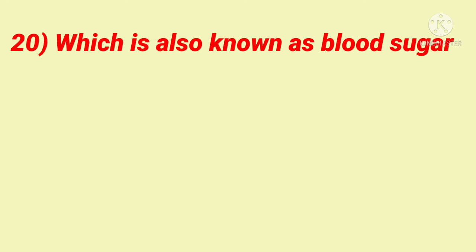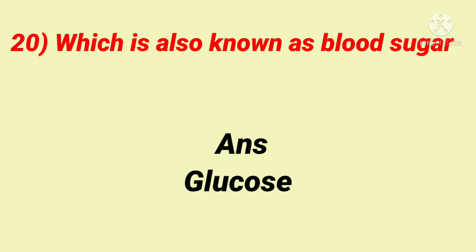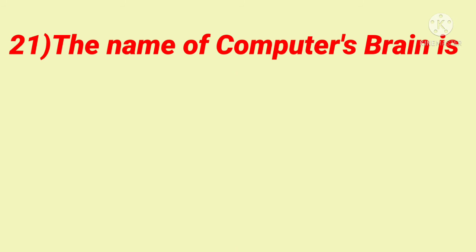Which is also known as Blood Sugar? Answer: Glucose. The name of the computer's brain is... Answer: CPU, Central Processing Unit.